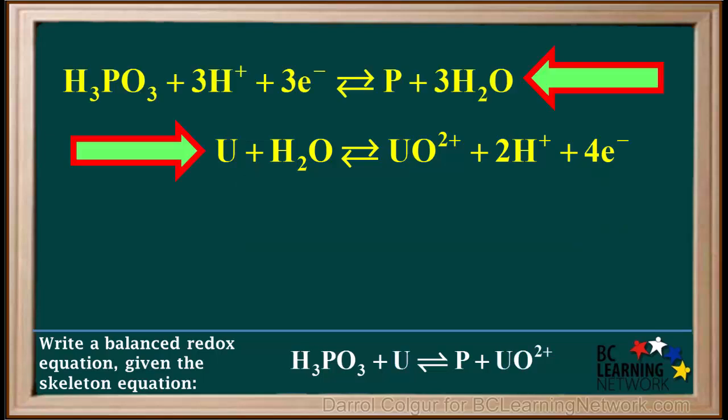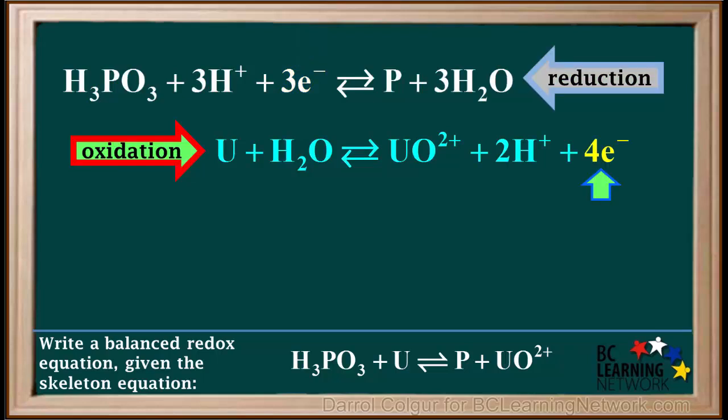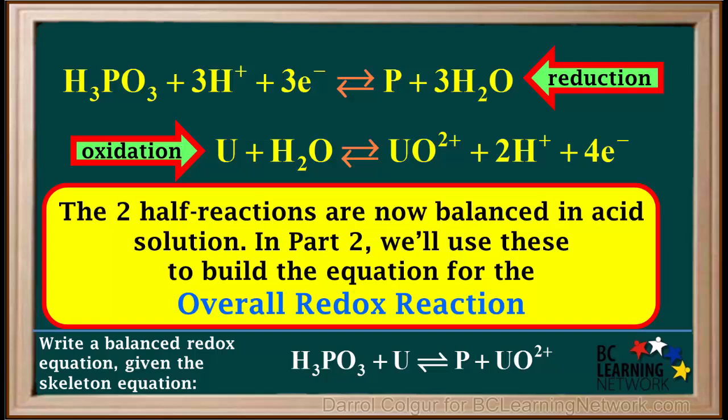Here are the equations for the two half-reactions. The top half-reaction is reduction, because electrons are gained. The lower half-reaction is oxidation, because electrons are being lost. The two half-reactions are now balanced in acid solution. In the next video, part 2, we'll use these to build the equation for the overall redox reaction.